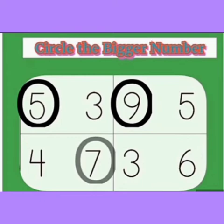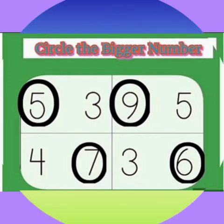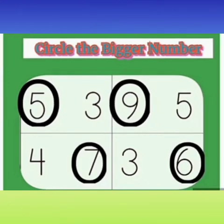Yes, absolutely correct — seven is bigger. The last box has numbers three and six. Which one is bigger? Yes, six is the bigger number.